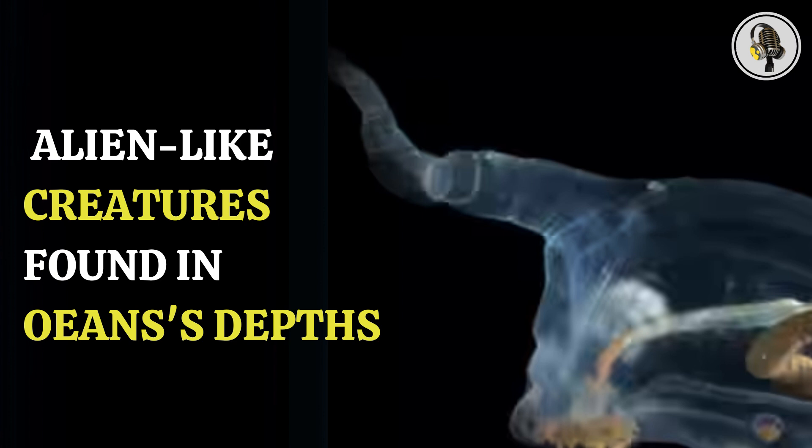Other creatures found were a delicate glass sponge, a cup-shaped filter feeder, a tanaid crustacean, sea stars, corals and anemones, as well as a spectacular barbie-pink sea pig.